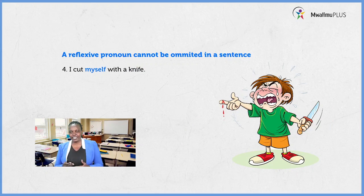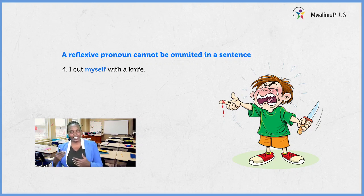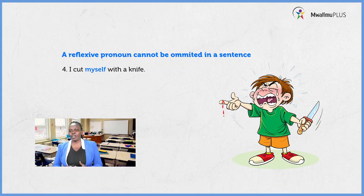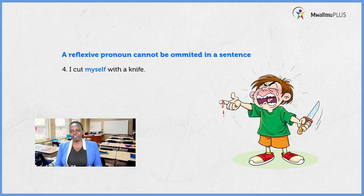Still another sentence showing that we cannot omit a reflexive pronoun. Let us read: I cut myself with a knife. Try reading without the word myself — it sounds incomplete. So let us read with the word myself: I cut myself with a knife. That is how we use reflexive pronouns in constructing sentences.